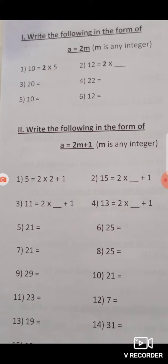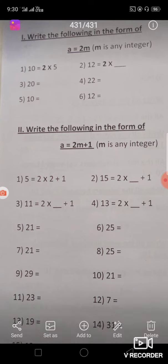Second question, write the following in the form of a equals 2m plus 1. 5 can be written as 2 into 2 plus 1, in the 2m plus 1 form.